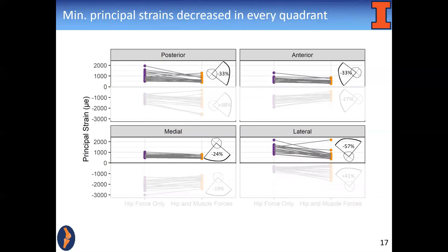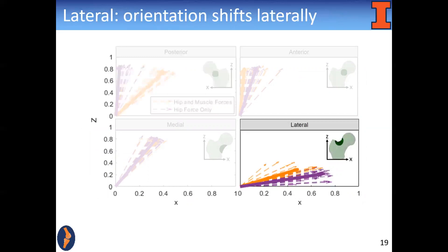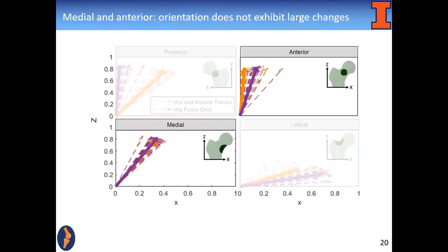Most notably, the tensile strains decrease in every single quadrant. Next, we compare the principal orientations in each quadrant. The X and Z coordinates correspond to the medial and proximal directions, respectively. When muscles are included in the posterior quadrant, the X coordinate significantly increases, representing a shift in the medial direction. In the lateral quadrant, the X coordinate significantly decreases, representing a shift in the lateral direction. The medial and anterior quadrants do not exhibit large changes in principal orientation.